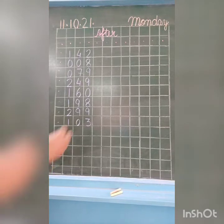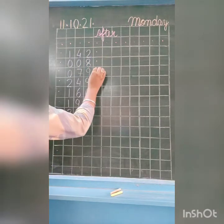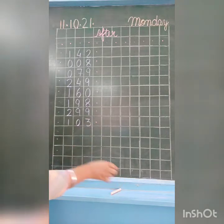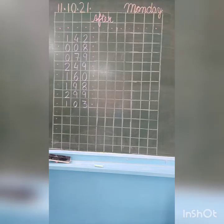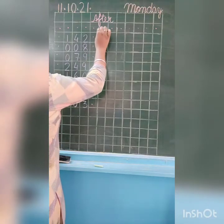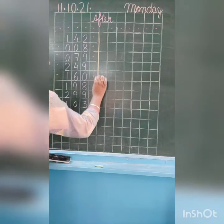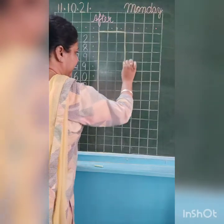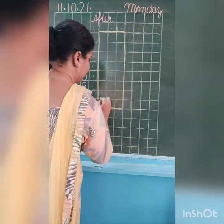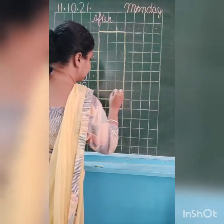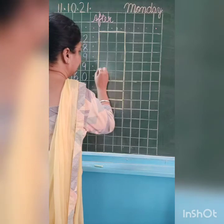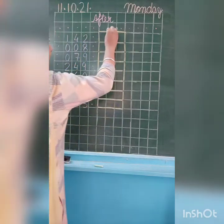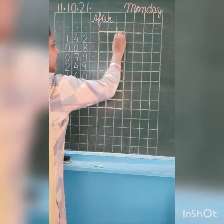After this, leave one line here, and now let us draw a box for the answers, like this. Draw sleeping lines here, and here you draw standing lines.